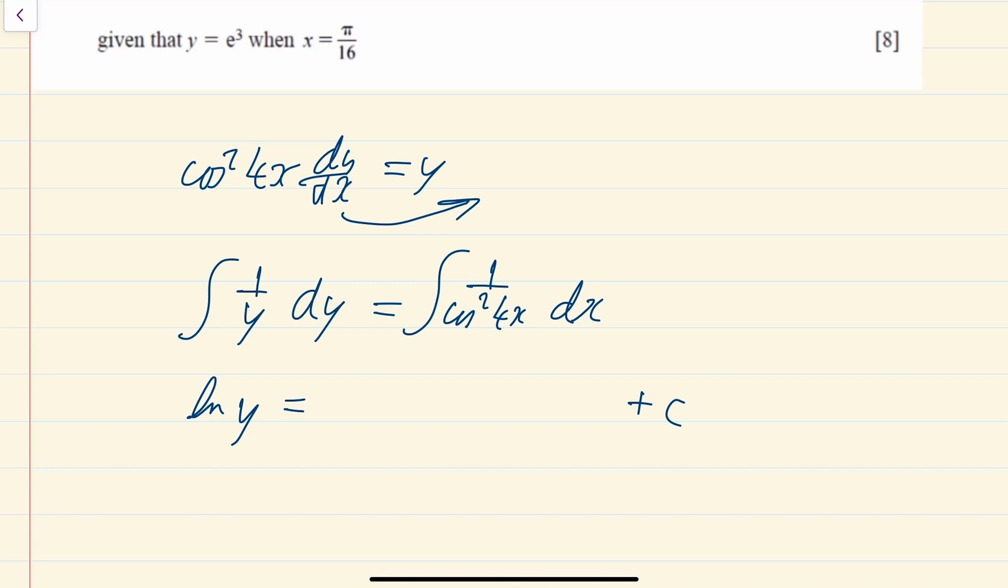And then before we do that, let's just change what this looks like here. 1 over cos squared is the same as sec squared of 4x dx. And then we should know that if you integrate sec squared, you get tan. And that just comes from if you differentiate tan, you get sec squared. So it's actually going to be 1/4 tan 4x and then plus your constant of integration c.